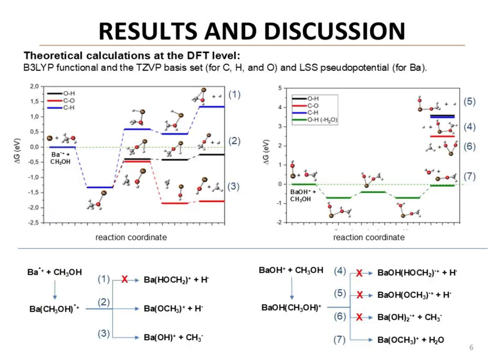Experimental data were complemented with theoretical DFT calculations. The reaction channels between methanol and barium clusters are analyzed, identifying the favorable channel based on free energy and reaction barriers. For the barium-plus cluster, channels 2 and 3 are favorable, and for the barium-OH+, only channel 7 was favorable.